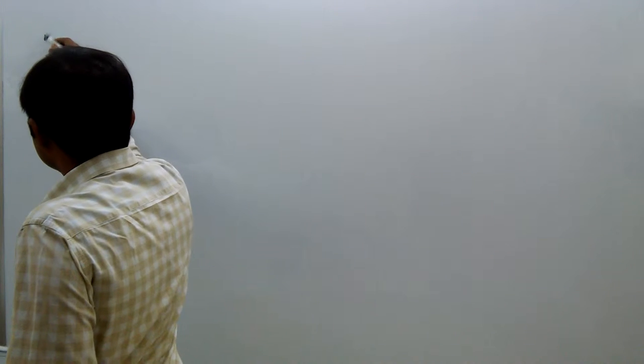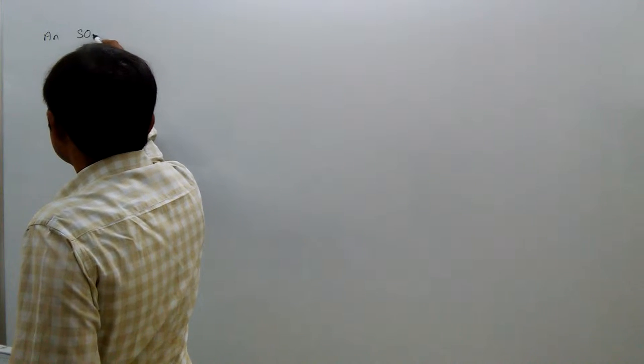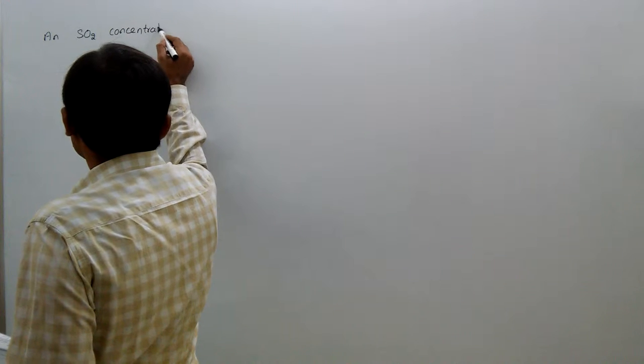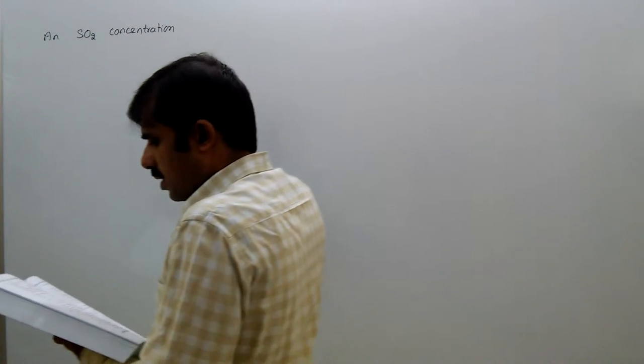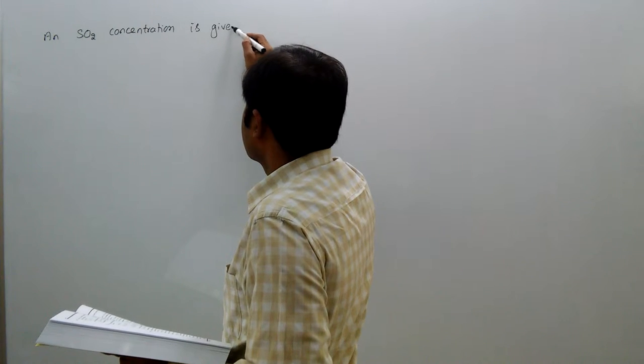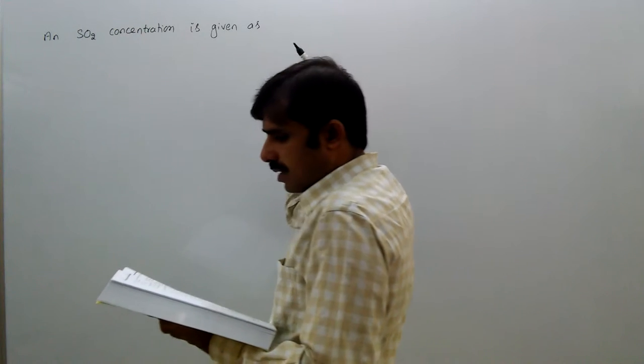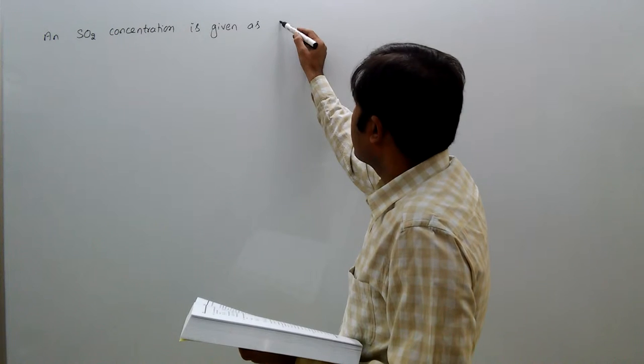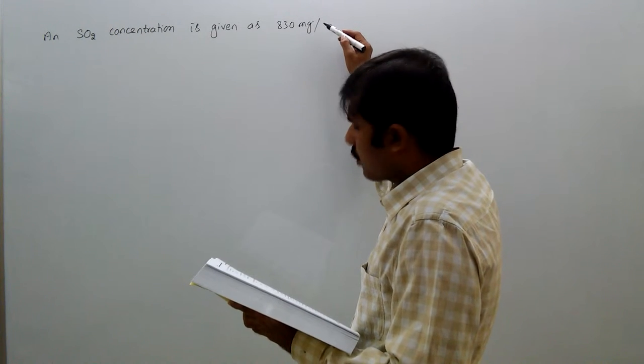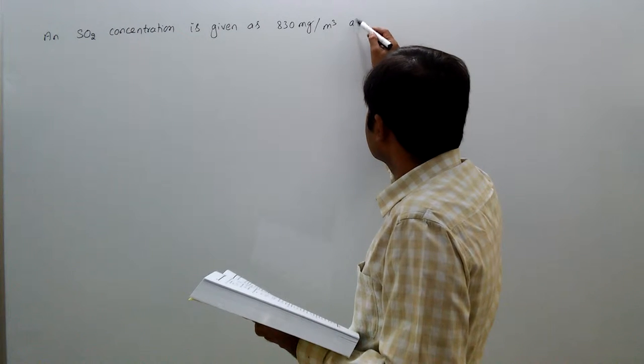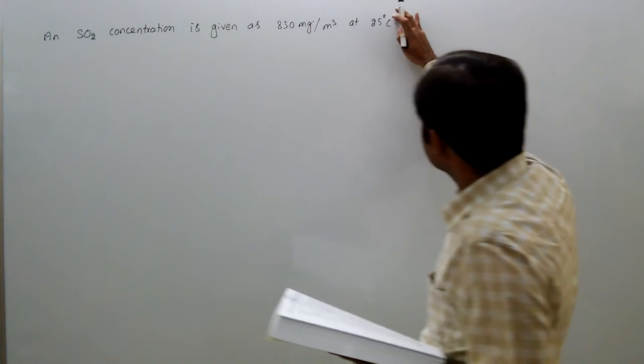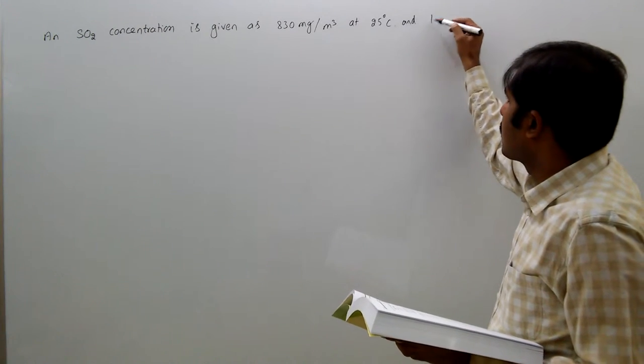An SO2 concentration is given as 830 mg per meter cube at 25 degrees centigrade and 1 atmosphere.